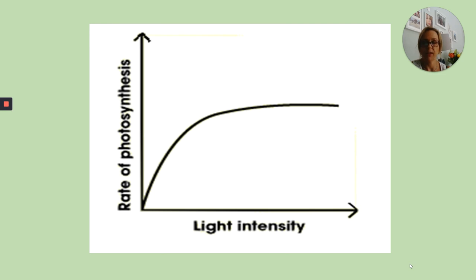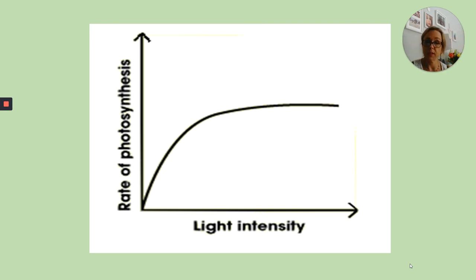Initially, when the pondweed is close to the light source, there is a high rate of photosynthesis. As the light intensity decreases with distance, the rate of photosynthesis starts to drop and then level off — it doesn't stop, it just levels off. This means that light intensity is a limiting factor for photosynthesis: if you reduce the light intensity, it causes the rate of photosynthesis to drop even if everything else is at the optimum level. Without enough light, the plant cannot keep increasing the rate of photosynthesis.